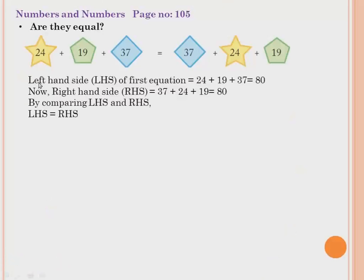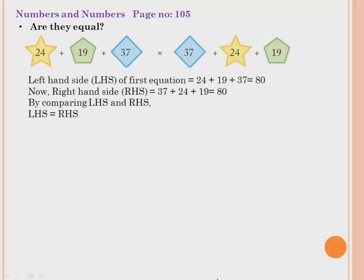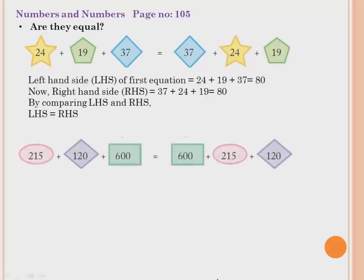Now let's see the first equation. The left hand side is 24 plus 19 plus 37, which equals 80. Comparing LHS and RHS, both are 80, so they are equal. LHS means left hand side and RHS means right hand side.